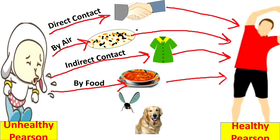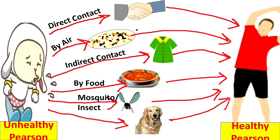The next mode of spread is through mosquitoes and insects. Diseases like malaria, yellow fever, plague, dengue, and kala-azar are caused by blood-sucking insects like mosquitoes, fleas, bugs, and sand flies. Malaria is caused by a protozoan carried by the female Anopheles mosquito. When the mosquito bites a person suffering from malaria, the protozoa are sucked up with the blood. When this mosquito then bites a healthy person, the protozoa are injected into that person's blood and cause malaria.